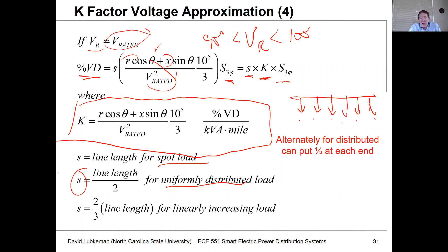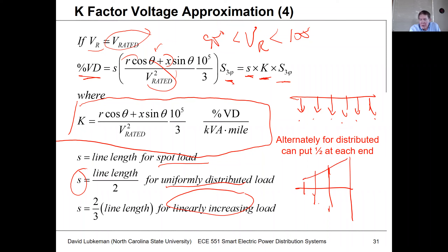There's another case — if we have a linearly increasing load, like the substation planning example showing a triangular-shaped service area, then the effective line length is going to be two-thirds times the actual line length.